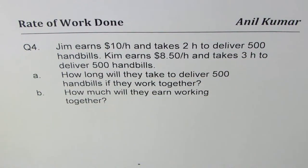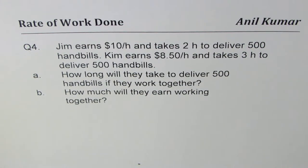I'm Anil Kumar. Here's a very interesting question on rate of work done, question number four. Jim earns $10 per hour and takes two hours to deliver 500 handbills. Kim earns $8.50 per hour and takes three hours to deliver 500 handbills. How long will they take to deliver 500 handbills if they work together? That's part A. And part B is how much will they earn working together?